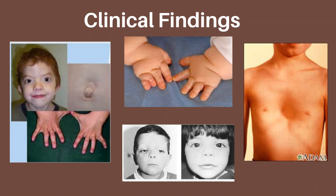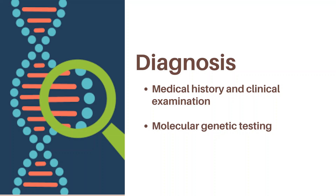Genital features include hypospadias, cryptorchidism, and scrotal abnormalities. Beside these abnormalities, there may be other systemic defects like congenital heart defects, strabismus, ophthalmoplegia, and obesity. There may also be learning disabilities and behavioral disorders in the affected person.